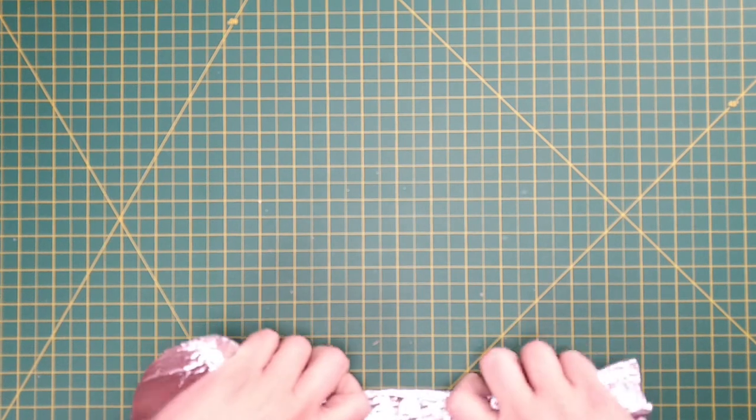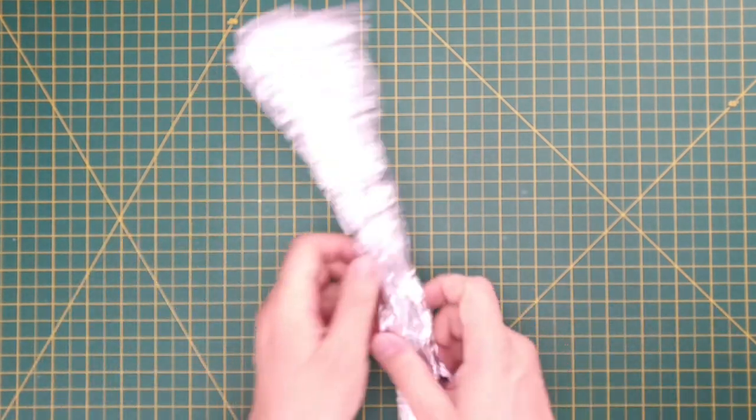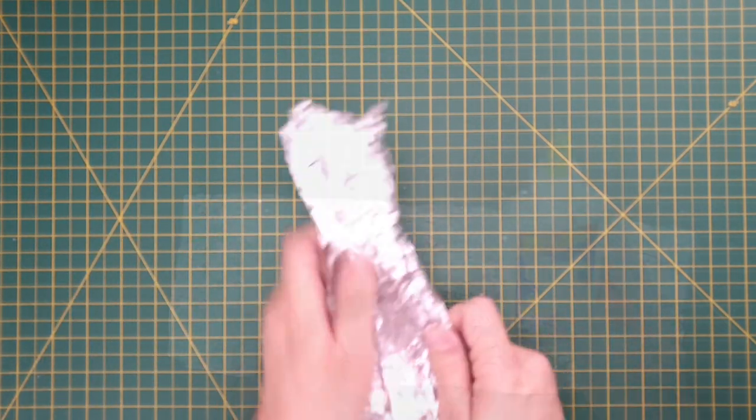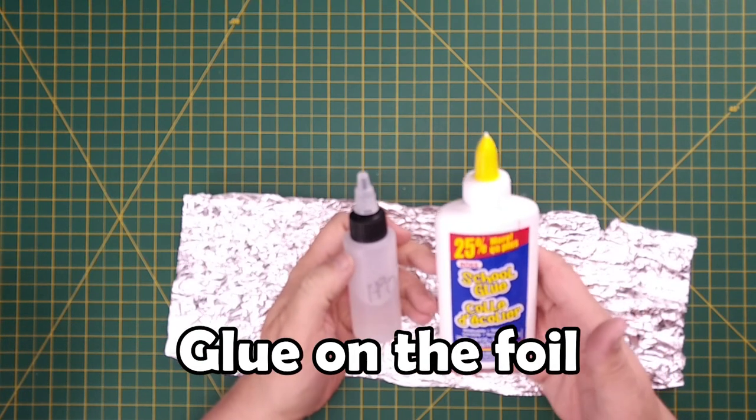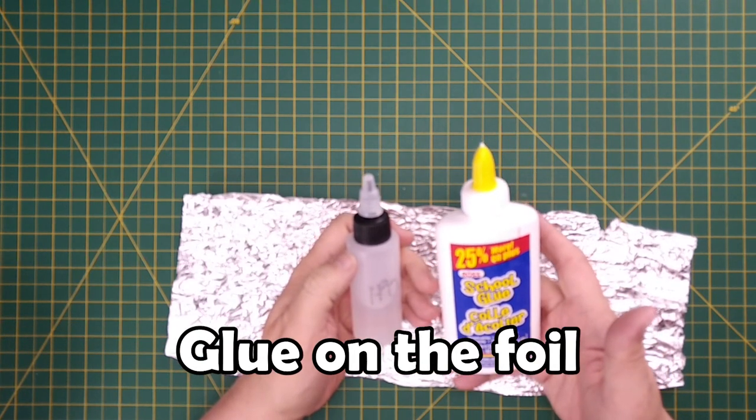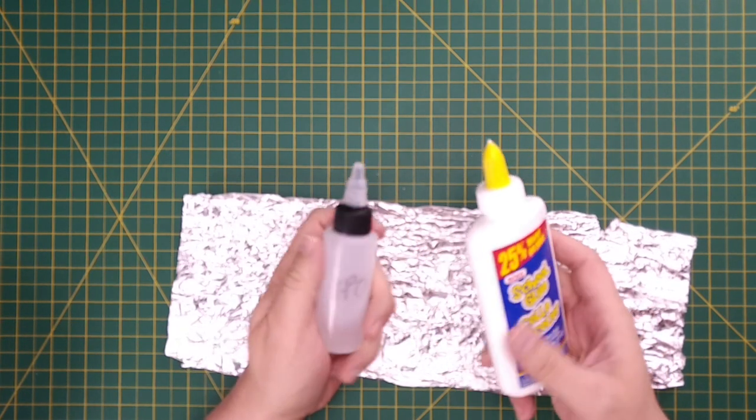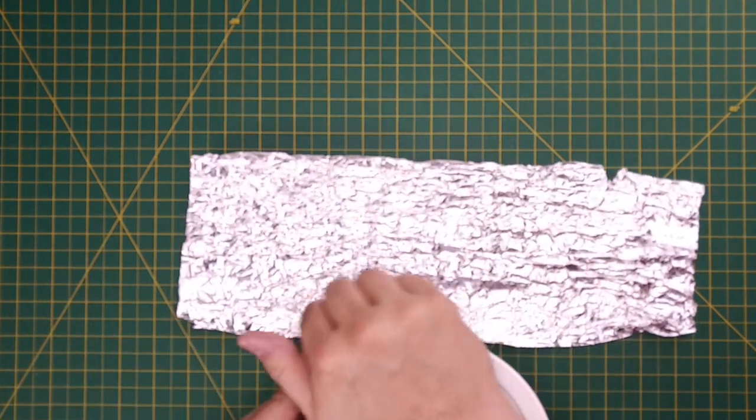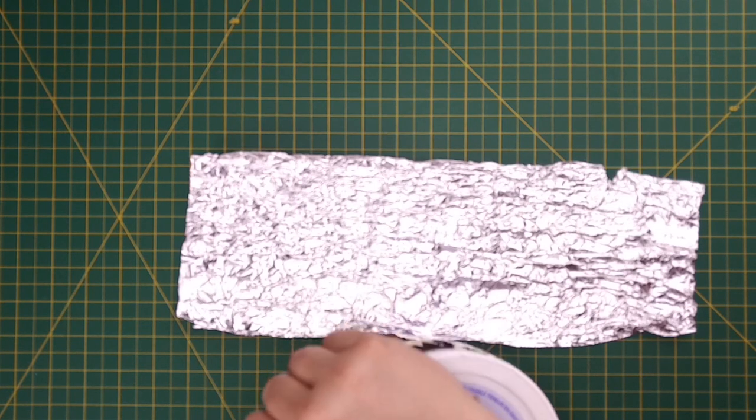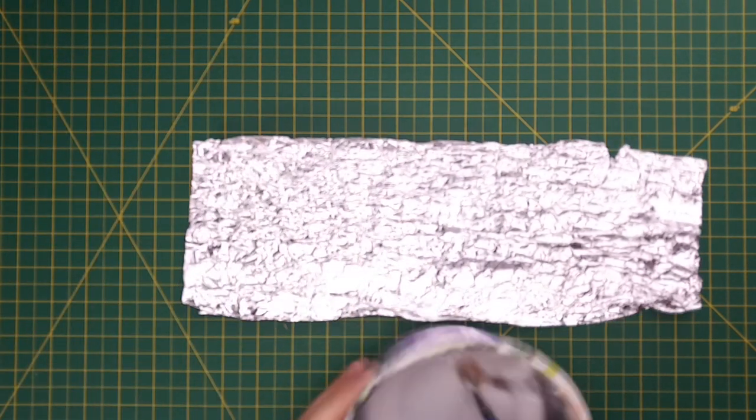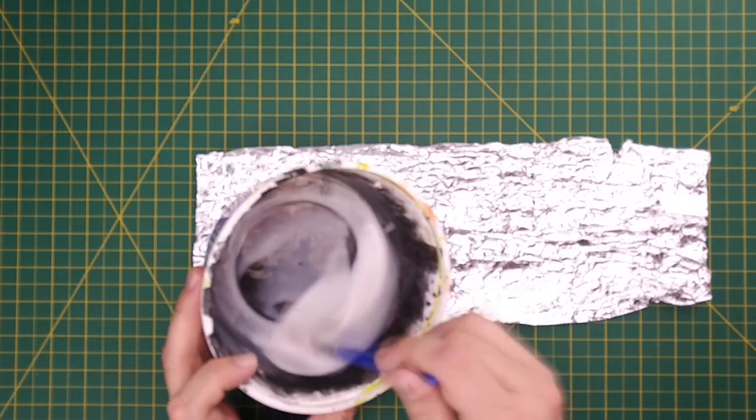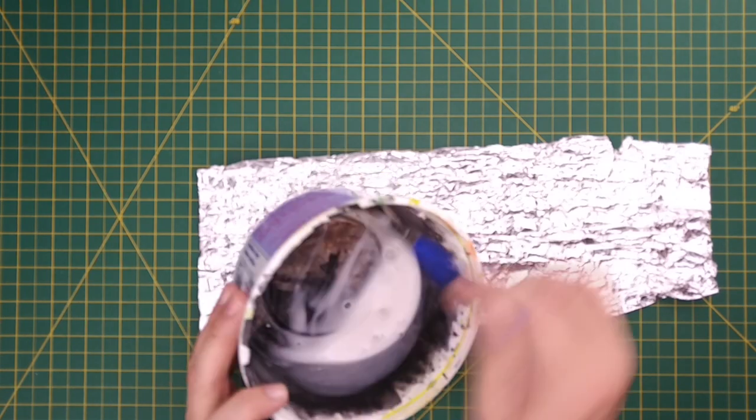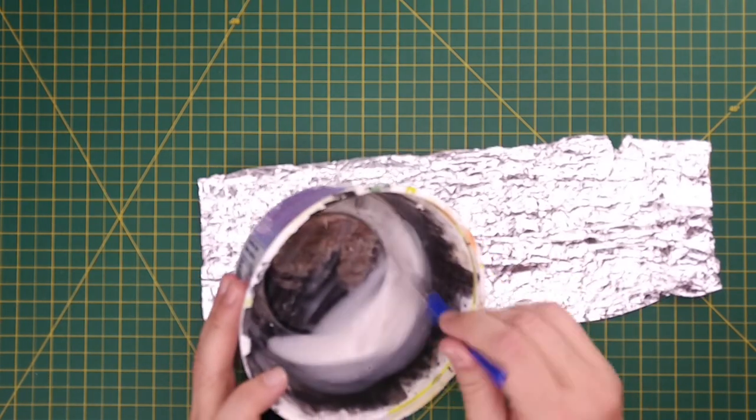Now that I've started to crumple the foil I'll just keep doing that in order to create a texture. Next I want to create a glue paste with water and PVA glue. I want a relatively watery mixture so a 60-40 water to PVA or even a 70-30 will work just fine. You don't need precise measurements you just want the glue to be somewhat runny. However you want to make sure that the water and the glue are thoroughly mixed together.